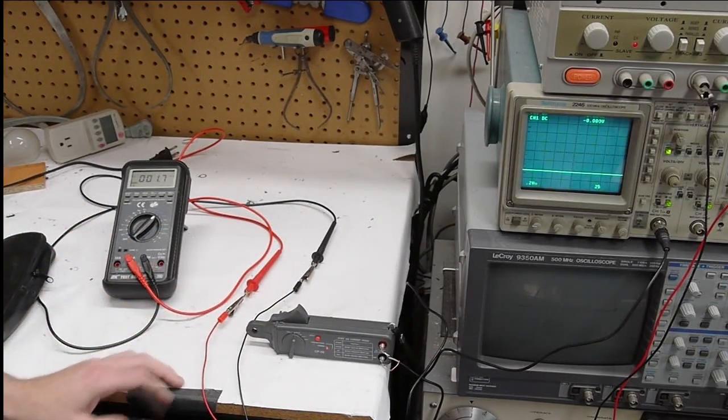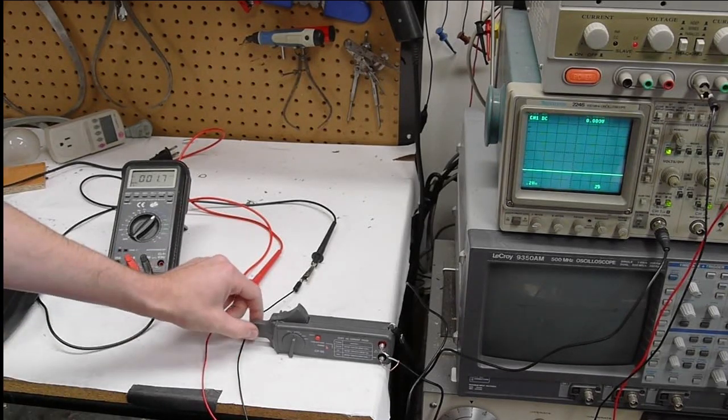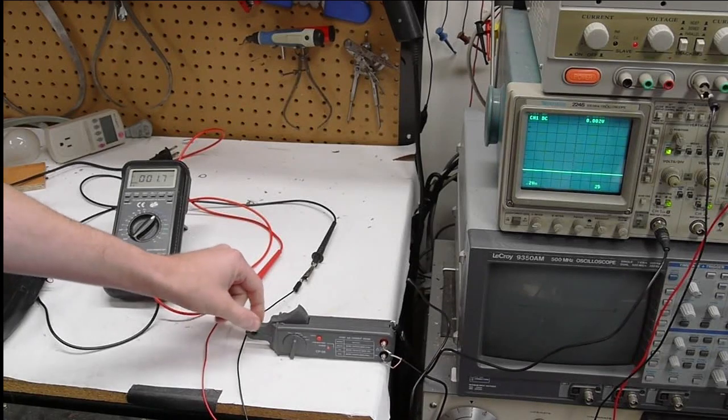And if you've shopped for one of these clamp-on current probes before, you've probably noticed that the good ones are extremely expensive. Some are over $1,000, a tech clamp-on current probe that's capable of high frequency measurement.